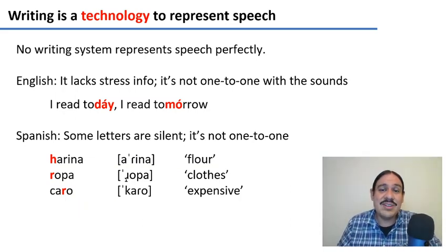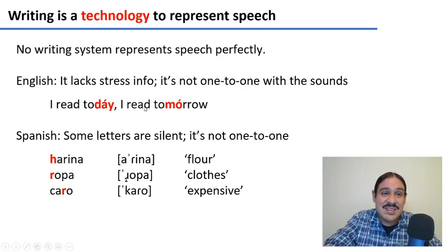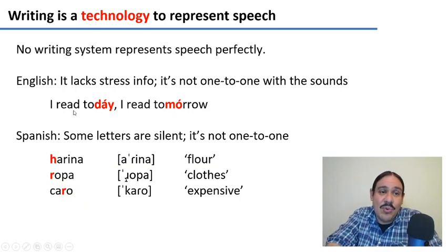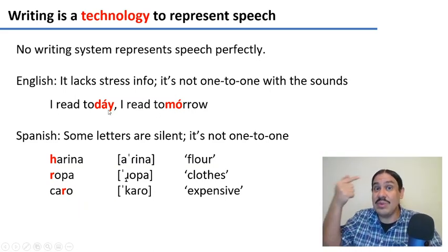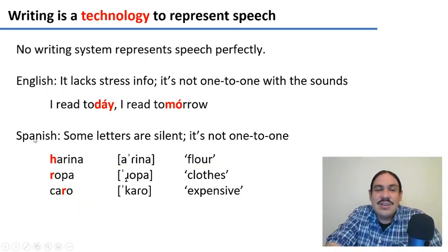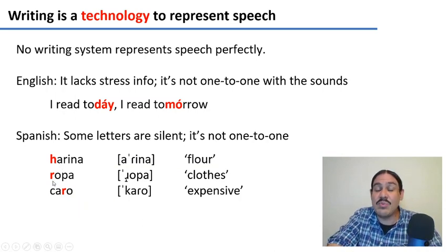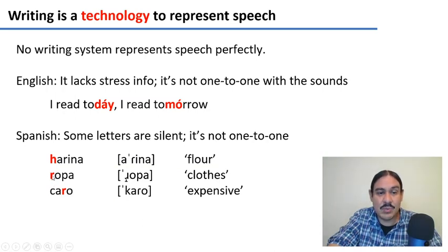Also, English writing does not have a one-to-one correspondence with sounds. You have words like 'read' and 'read' which have the same graphical form but are not pronounced the same, so you need to do quite a bit of guessing. Every writing system has some quirk. In Spanish, there are many silent letters like the 'h' in 'arena,' and letters with more than one pronunciation — for example, a symbol that reads 'jota' at the beginning of a word or differently in the middle.